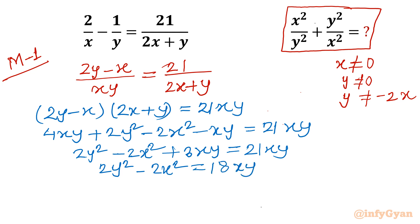The equation is divisible by 2, so we divide by 2 to get y² minus x² equals 9xy. This result is important.